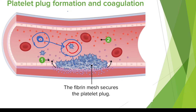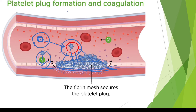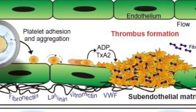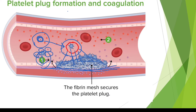The platelets come to the injured site and stick to the endothelium underneath — this process is known as adhesion. Then another layer of platelets is deposited on top. The process of binding one platelet with another is known as aggregation. These two processes — adhesion and aggregation — are essential for blood platelet plug formation and coagulation.